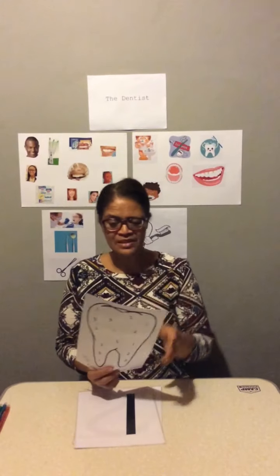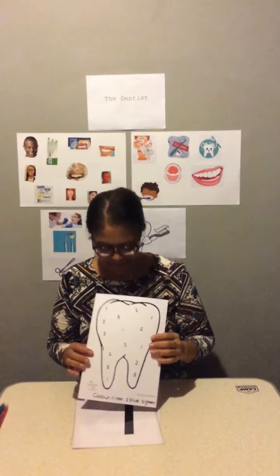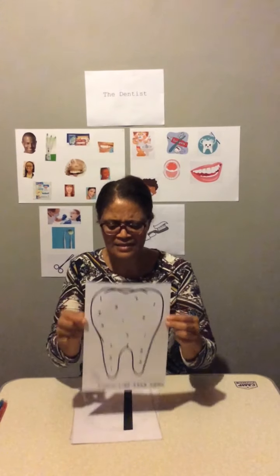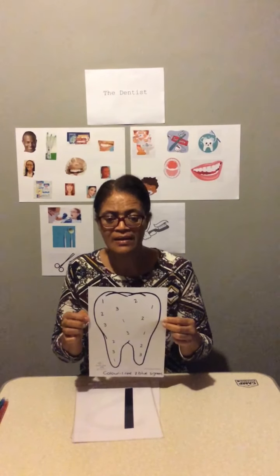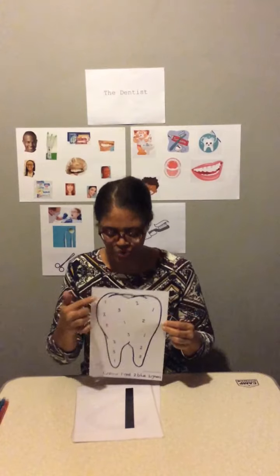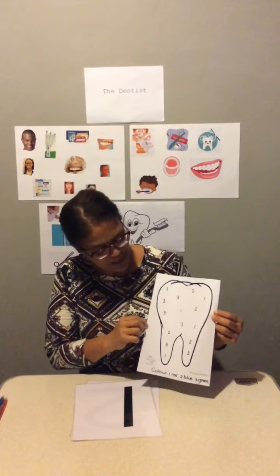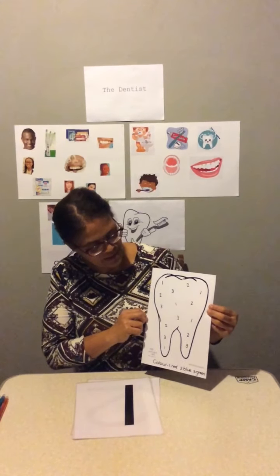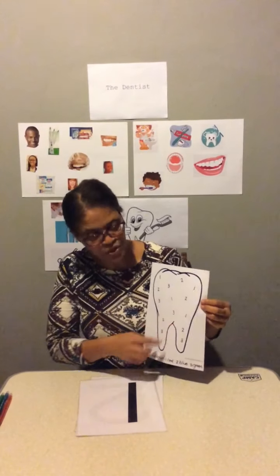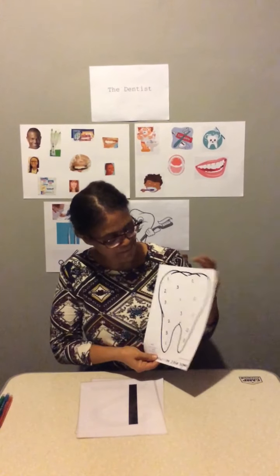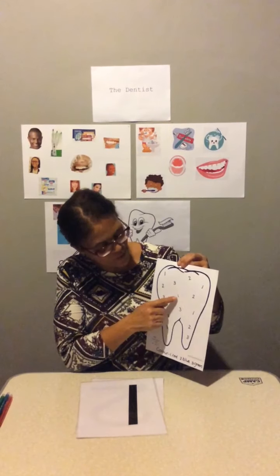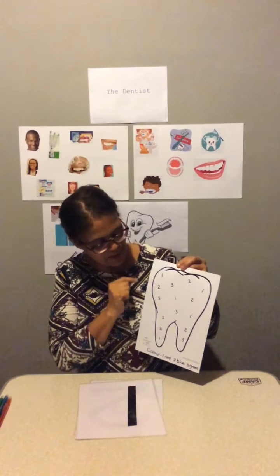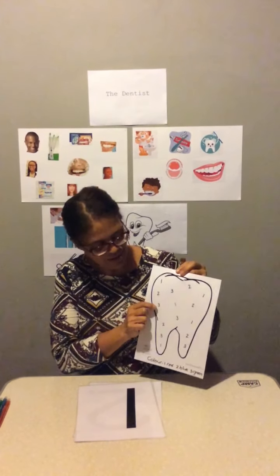The activity for today. Can you tell teacher what is this? A tooth. Now we have numbers on the tooth. Number 1, number 2 and number 3.